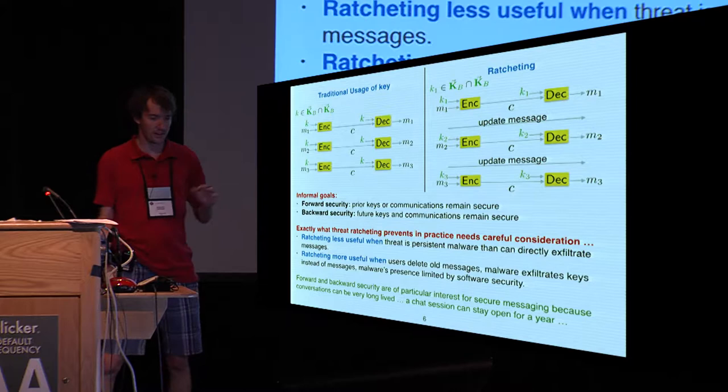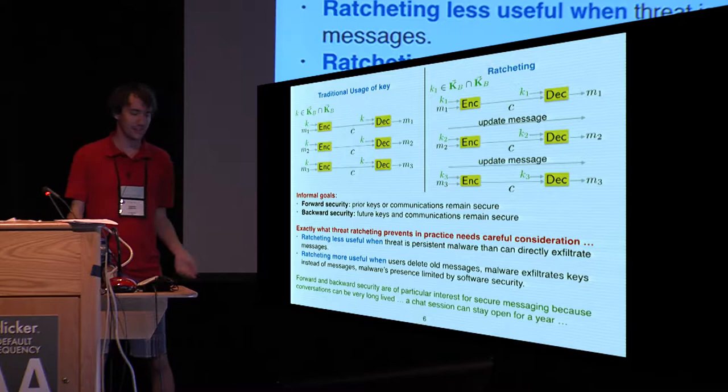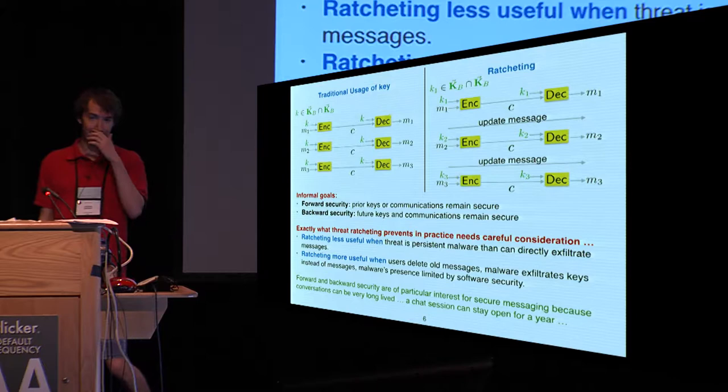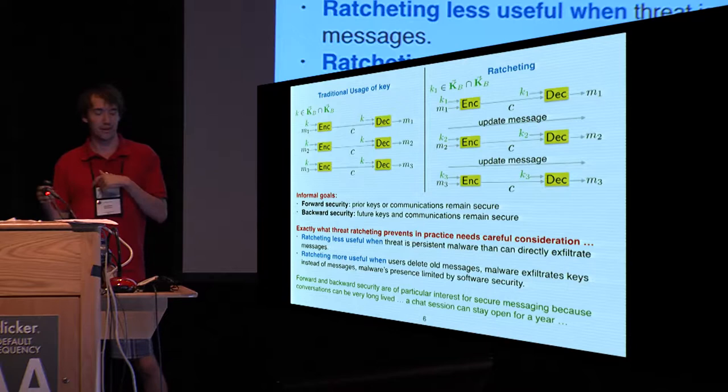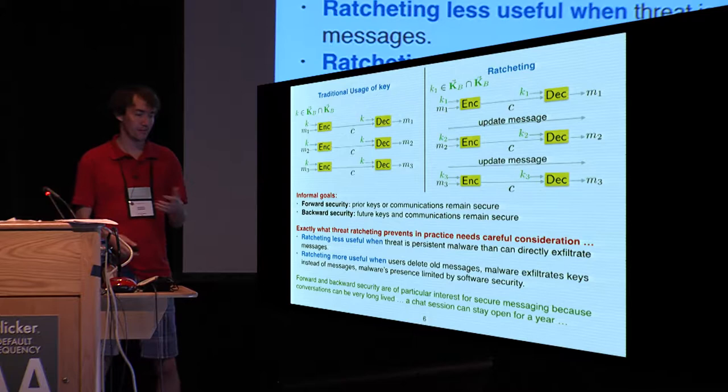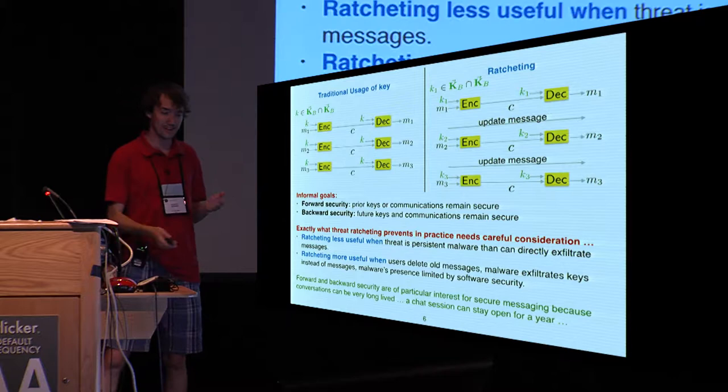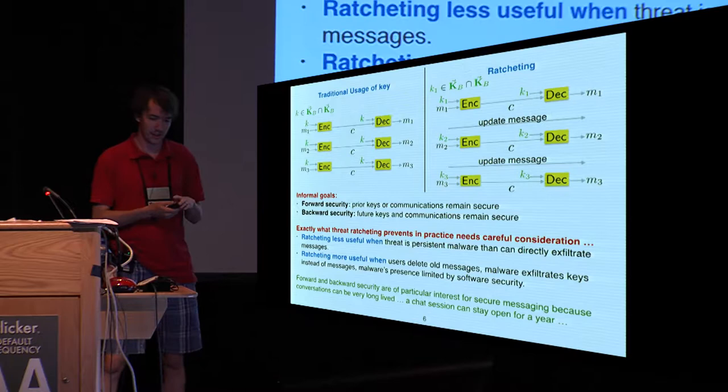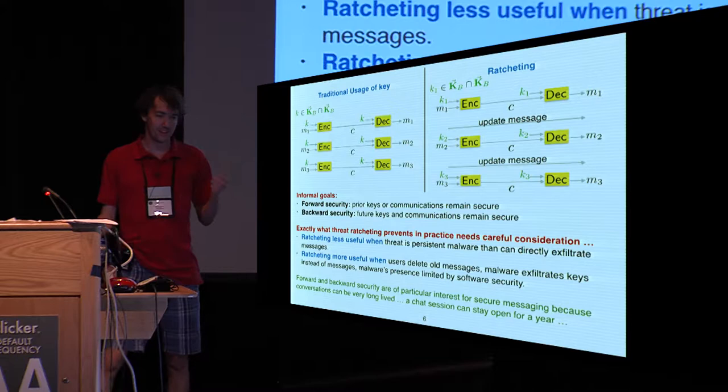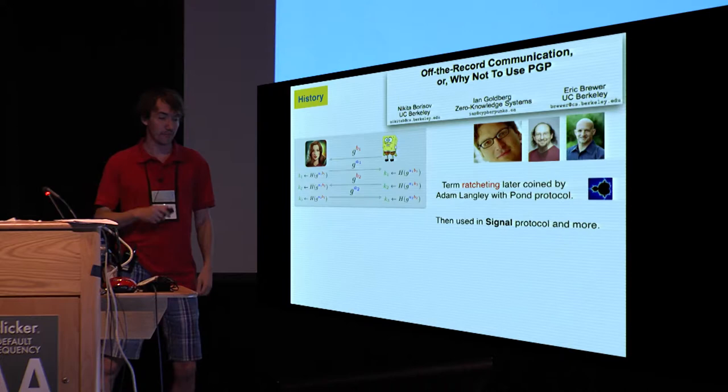Exactly what threats are being protected against by this ratcheting does need careful consideration, because if the threat you're worried about is some sort of persistent malware that can just sit on your phone and exfiltrate all your messages, ratcheting isn't really adding anything to help you there. Where ratcheting might be more useful is if, say, the malware is only able to exfiltrate keys and its presence is somehow being limited by the software security that you have. As we saw in the previous talks, these security notions can also be considered for something like TLS. One reason why they seem to be particularly interesting in the messaging setting is chatting conversations can stay open for long periods of time, so there's this longer period of time to be worried about.